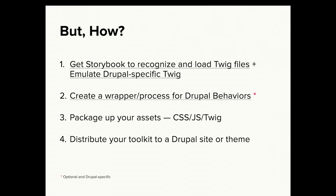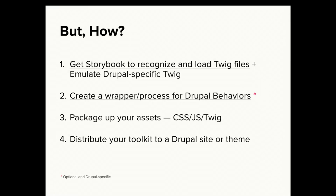The next step is to create a wrapper or process to use Drupal behaviors, because you probably want to use Drupal behaviors on your site for your JavaScript and jQuery. But Storybook doesn't recognize that. So we sub in a function or JavaScript class that wraps it, letting Storybook recognize Drupal behaviors and display them. We want to write our JavaScript the way Drupal wants it — we're just emulating things to get Storybook to display it properly. I basically ripped this straight out of Emulsify and referenced it in the code.